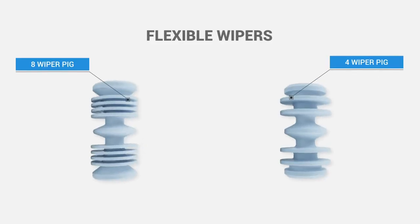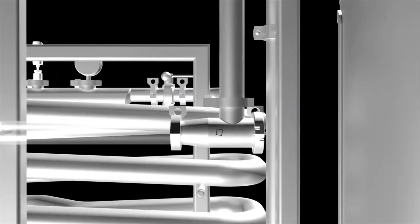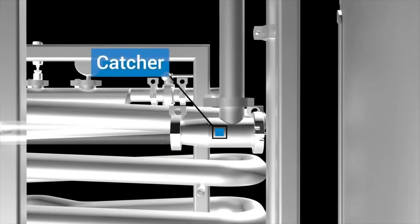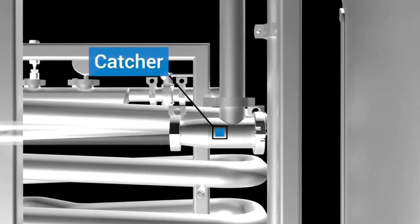The flexible wipers on the pig maintain a tight seal when passing through sanitary tube, fittings, full port valves, and standard radius elbows. A catcher at the end of the line prevents the pig from going into the tank and allows Steve to collect the projectile for future use.